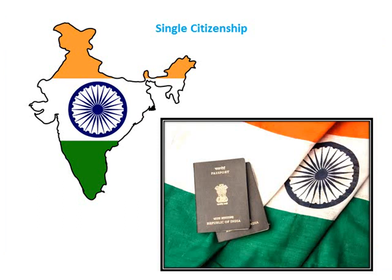The first important feature of our Indian constitution is single citizenship. The name itself suggests one citizenship — I could be born in any state, but I am known as an Indian. For example, I could be born in Punjab but I am known as the citizen of India. Irrespective of the state of domicile, all are the citizens of India. This is unlike the system in the US, where people can be citizens of the New York state as well as American citizens. But in India, the framers of the constitution decided to keep it as single citizenship.